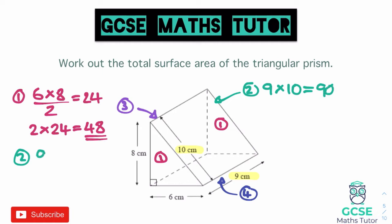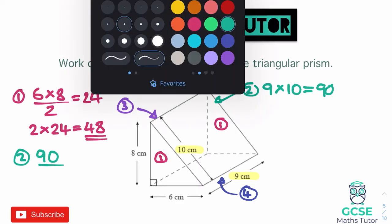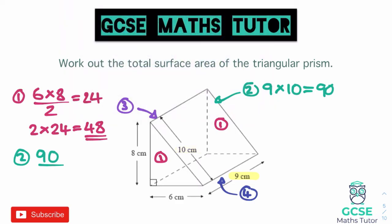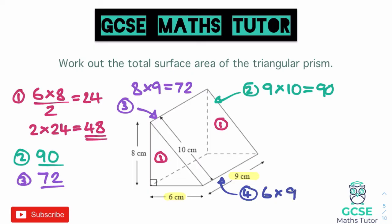For rectangle number three — the back rectangle — the bottom length is nine and the height is eight, so eight times nine gives an area of 72. For rectangle number four on the bottom, the length is nine and the width is six, so six times nine gives an area of 54. That's our final face.